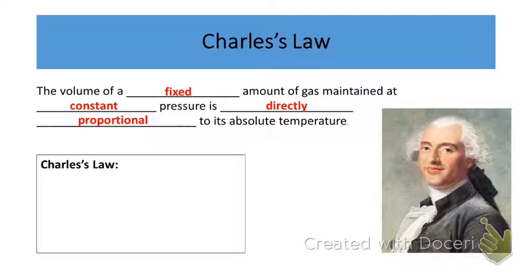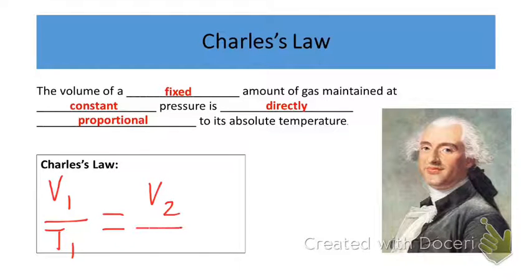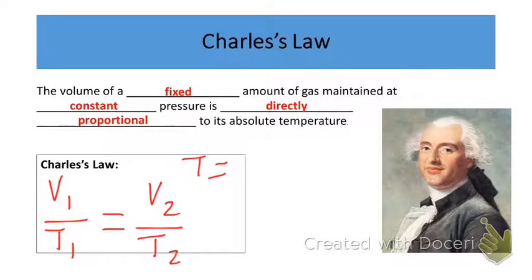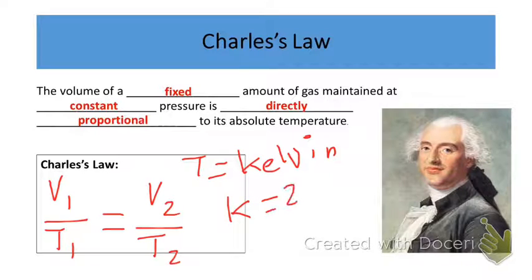We can express Charles' Law mathematically: V1 over T1 equals V2 over T2, where V1 and T1 are initial conditions and V2 and T2 are the new conditions. This mathematical relationship confirms a direct relationship between temperature and volume. For gases, we need to use the Kelvin scale, which is very important when working with gas laws. We'll often need to convert Celsius to Kelvin by taking 273 and adding our Celsius value.